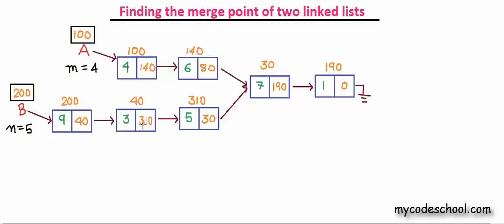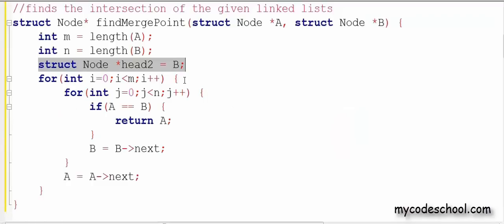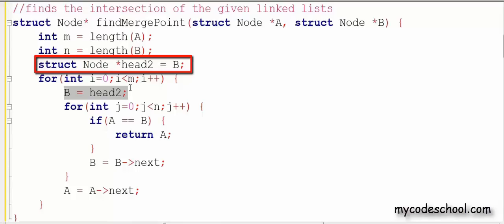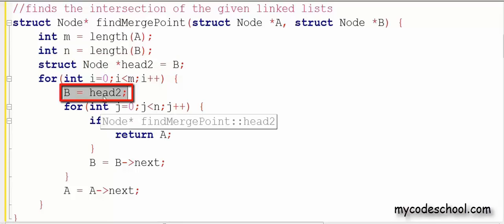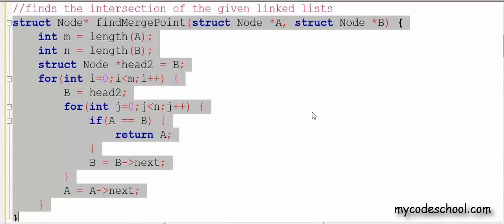Like while comparing 100, we would have traversed all the nodes of B and reached 190. So we need to bring it back to 200 so that it points to the starting node of a linked list. So what I have done is made a copy of the pointer of the starting node of B as head2 and update B as head2 for every iteration of the I loop. This code would then find the merge point if it exists.